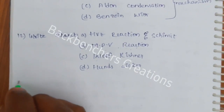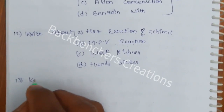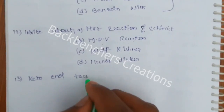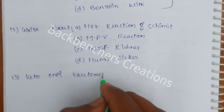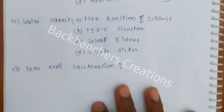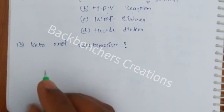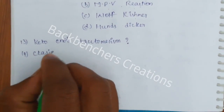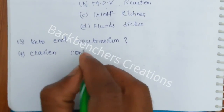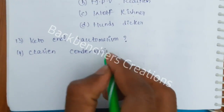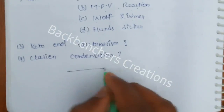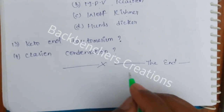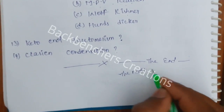Thirteenth question: Keto-enol tautomerism. Fourteenth question: Claisen condensation. These are the most important questions.